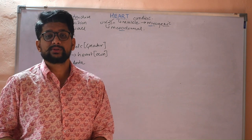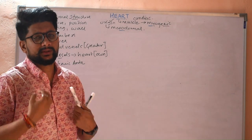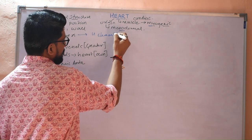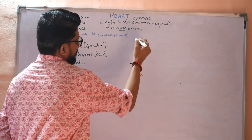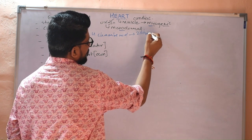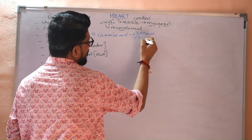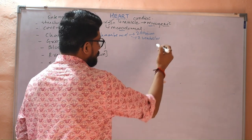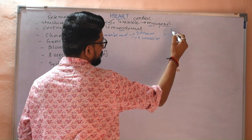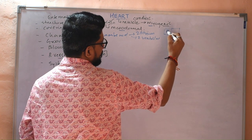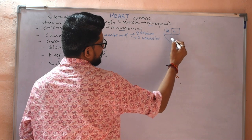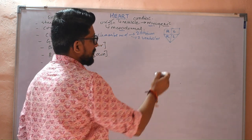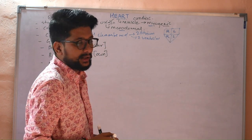Next are the chambers of the heart. The human heart is basically four-chambered. It consists of two atria and two ventricles. The upper right atrium and left atrium, and the lower conical projections — right ventricle and left ventricle. These are the four chambers of the heart.